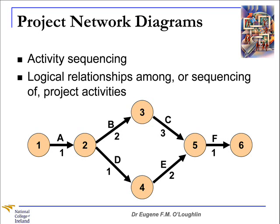Each arrow represents an activity, and each node at the beginning of the arrow — let's take a look at activity A — has node number 1 at the start of the arrow and node number 2 at the end of the arrow. This tells us the sequence of activities. So A is followed by B, which in turn is followed by C, which in turn is followed by F. Similarly, there's another path through this diagram where A can be followed by activity D, which is followed in turn by E, and finally followed by F. So this project network diagram, at a glance, lets us see what the sequence of activities through this project are.